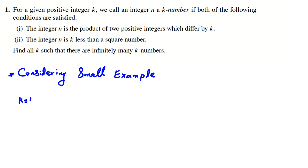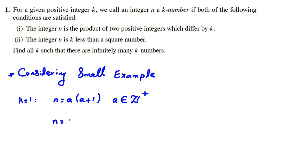Suppose k is 1. We say n is a k-number if both conditions are satisfied. First condition: n is the product of two positive integers which differ by 1, so it is a times (a+1), where a is a positive integer. Second condition: n is 1 less than a square number, so n equals b squared minus 1. We conclude that a(a+1) = n = b² - 1.